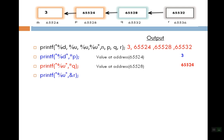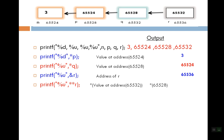The next statement is printf %u, &r. Here & is the address-of operator, so we print the address of r, which is 65536. So the output is 65536. Next is printf with star star r. We write value-at-address, r is 65532, so at 65532 we get 65528. Then one more star: value-at-address 65528 gives 65524. So the output is 65524. Then star r gives value-at-address 65532, which gives 65528. So the output is 65528.